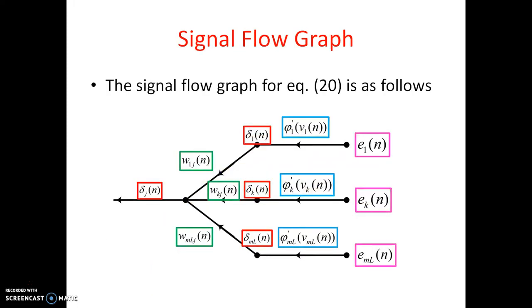This is the signal flow graph. So the signal flow graph for the equation 20 is as follows. Our journey has to start from error. So with error, let me take the first one V1 of N. The error is processed back as phi 1 dash of V1 of N is equal to delta. Then you will get delta 1 of N and then that will be multiplied so that you will get delta j of N. So in this way the signal flow graph has been constructed and the error is processed backwards.